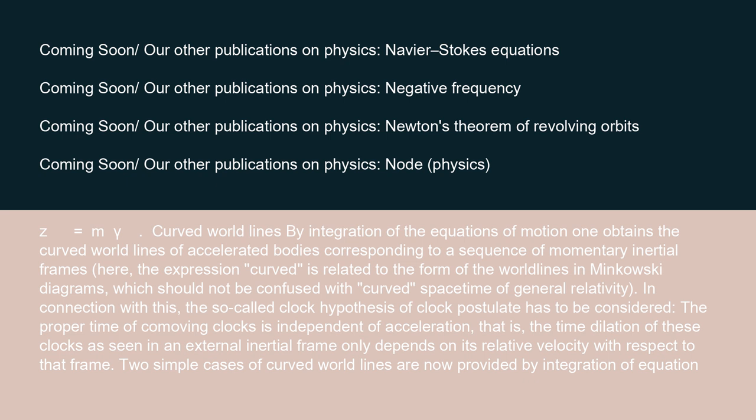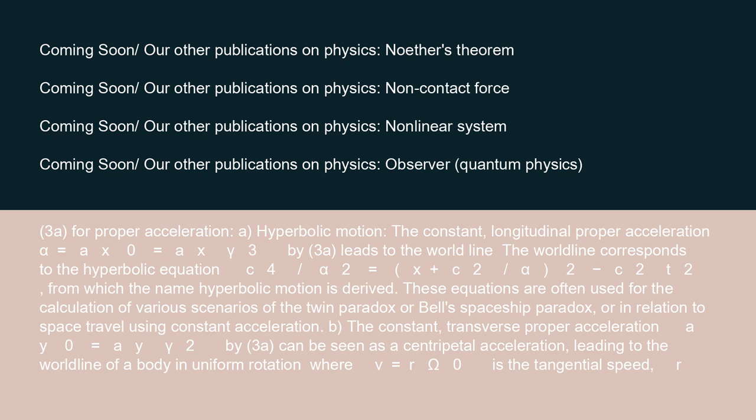Curved world lines: by integration of the equations of motion, one obtains the curved world lines of accelerated bodies corresponding to a sequence of momentary inertial frames. Here, the expression 'curve' is related to the form of the world lines in Minkowski diagrams, which should not be confused with curved spacetime of general relativity. In connection with this, the so-called clock hypothesis or clock postulate has to be considered: the proper time of comoving clocks is independent of acceleration. That is, the time dilation of these clocks as seen in an external inertial frame only depends on their relative velocity with respect to that frame. Two simple cases of curved world lines are provided by integration of equation 3a for proper acceleration.